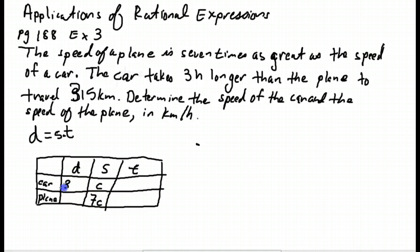The distance traveled, they're both traveling 315 kilometers. And now what we're going to do is come up with an expression for time. Time is distance divided by speed. So the time for the car is 315 over C. And the time for the plane is 315 over 7C. And there needs to be some relationship here.